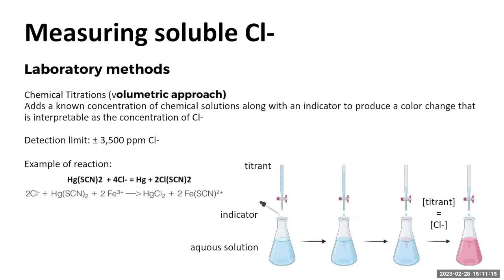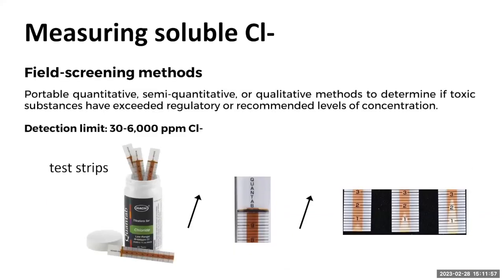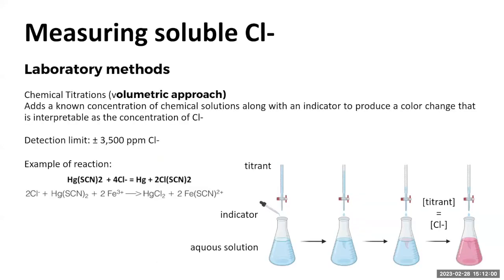The other option — for which you need to be in a laboratory with all your chemicals and instrumentation — is the volumetric approach. Basically, this is a chemical titration where you have a chloride extract, you add a chemical of known concentration and an indicator, and when you reach the same concentration in the titrant and in the chloride, you will see a color change in the solution. That color change is your endpoint — an indirect way to measure the chloride concentration.